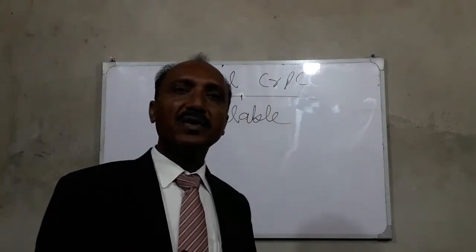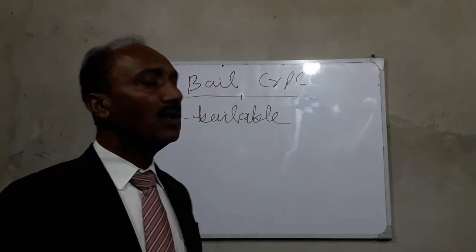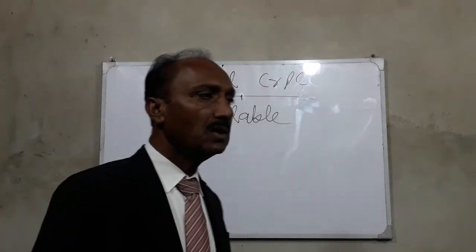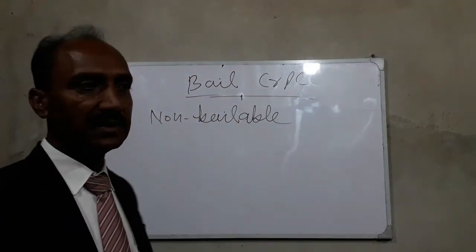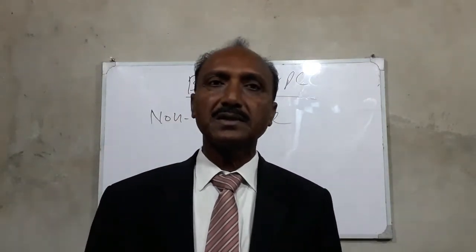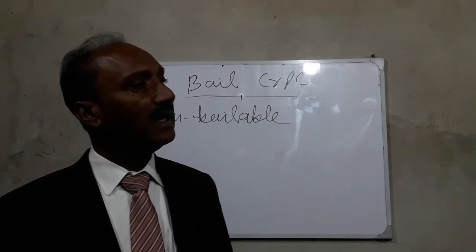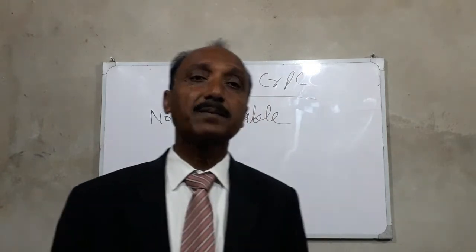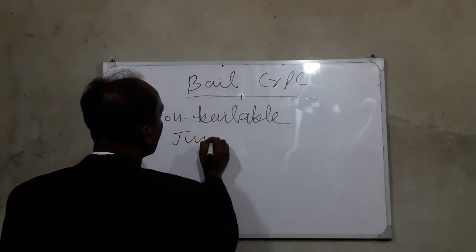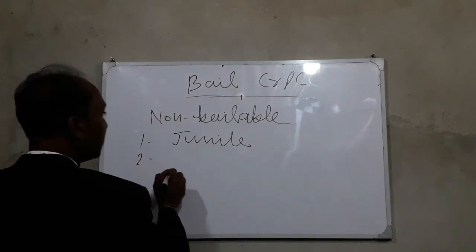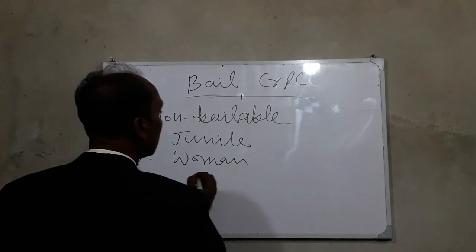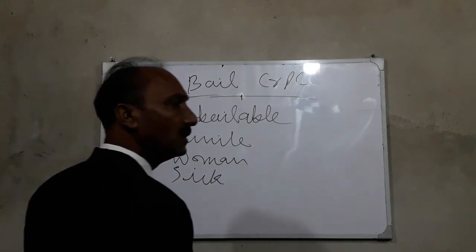In the case of non-bailable offenses, four types of accused are exempted from the rule of bail, keeping in mind the age, sex, and illness of the accused. The four types are: first, juvenile; second, woman; third, sick; and fourth, infirm.